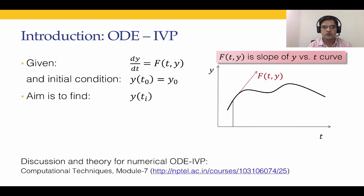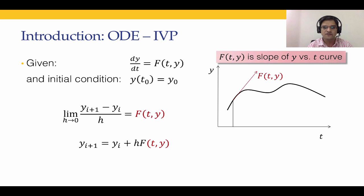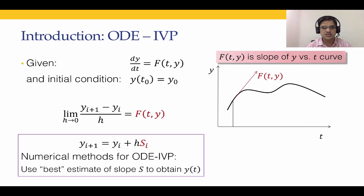Let's look at how to solve this ODE numerically. We can write dy/dt in finite difference form as (y(i+1) − y(i)) / h, where h is the step size. Removing the limit as h→0 and taking h as a very small value, we can rewrite this as: y(i+1) = y(i) + h × f(t, y). If f is evaluated at y(i) and t(i), we get what is known as Euler's explicit method.